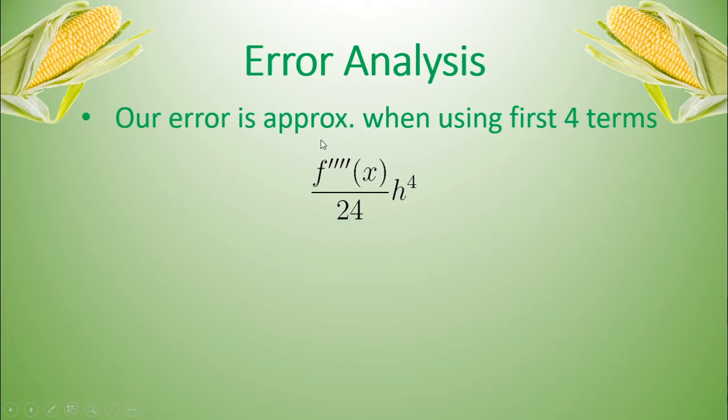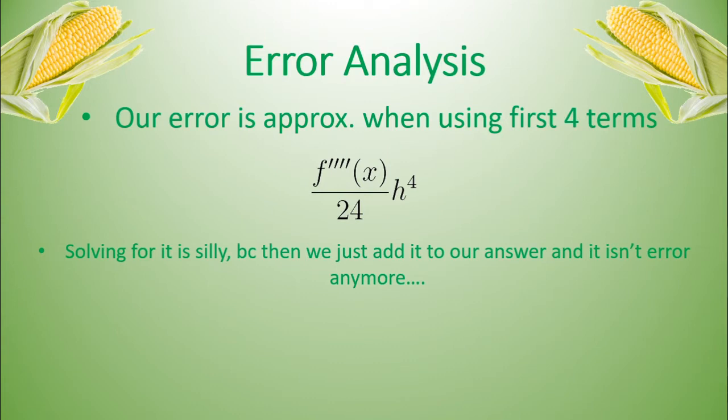So based off of that, our error is approximately this term when using the first four terms. Now, we can get this fourth derivative now, plug it in, and we can get what our error is approximately equal to. But that would be really silly. The reason why it'd be silly is because if we know about how much our error is, we might as well add it to our original answer. And now we've taken the Taylor series out to five terms, not four terms, and so on and so forth. So it's kind of a silly or it's kind of a not productive process to find the exact magnitude of error. Because if we could do that, we might as well have done that in the first place.